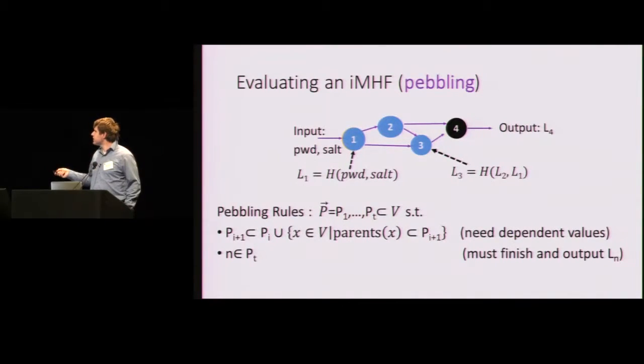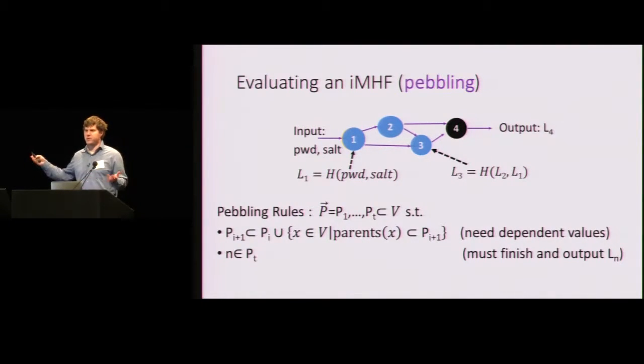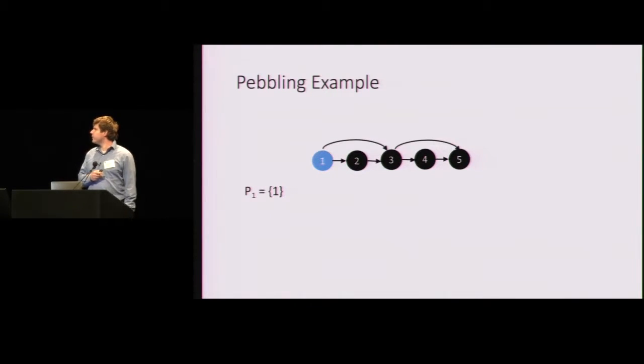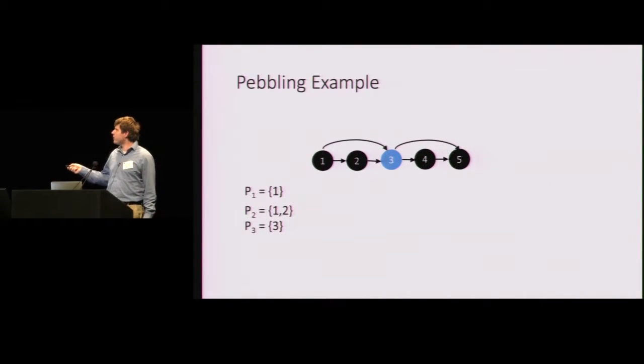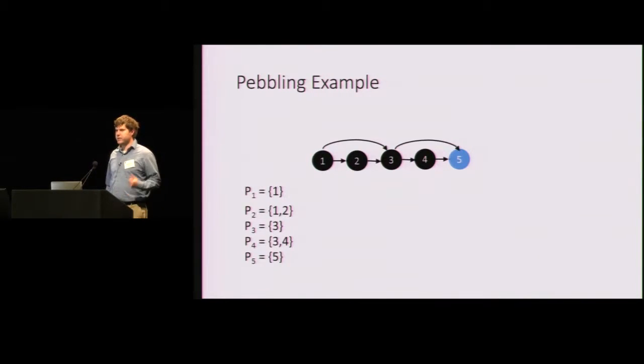And of course, the final requirement is that we have to finish pebbling this graph eventually. Our goal is to compute the output. So here's an example of pebbling. Very simple. You start off with no pebbles on the graph. We can start off by putting a pebble on node 1. Now we can place a pebble on node 2. Now we can place a pebble on node 3. At the same time, we might want to free up these two values to save memory. Now we can place a pebble on node 4. And now that we have pebbles on nodes 3 and 4, we can place a pebble on node 5.